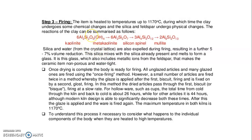In the firing process, the item is heated to temperatures up to 1170 degrees Celsius, during which the clay undergoes chemical changes and the silica undergoes a physical change. Silica and water are also expelled during firing, resulting in a further 5 to 7% volume reduction. The silica mixes with silica already present and melts to form a glass which includes metallic ions, making the ceramic item non-porous and watertight.